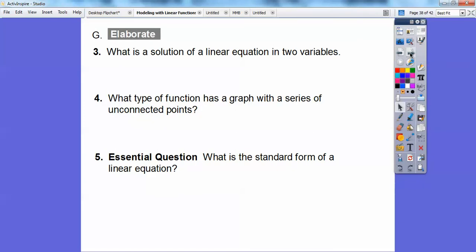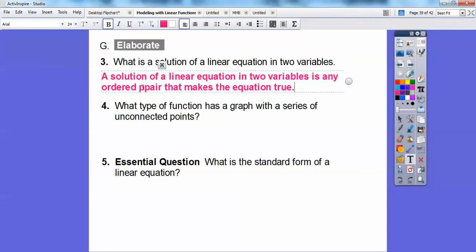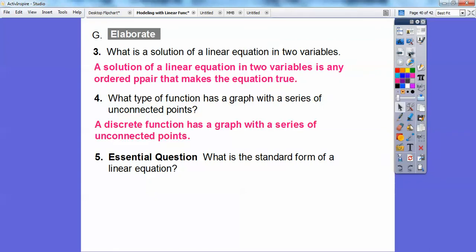A few more questions. What is the solution of a linear equation in two variables? A solution of a linear equation in two variables is any ordered pair that makes the equation true. Let me fix that because I send these to other teachers in my district. What type of function has a graph with a series of unconnected points? That would be a discrete function.